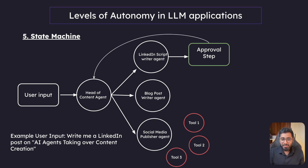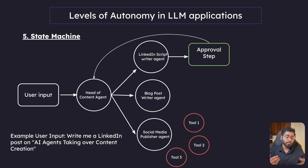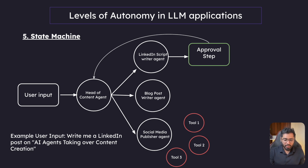Let's look at what is possible with a state machine. We have the user input, and the user only deals with a head of content agent. Taking the same example — write a LinkedIn post, a Twitter post, etc. — the user can say anything to the head of content agent. In a business, you would have one high-level subordinate you give all instructions to, and that subordinate has multiple subordinates under it. That is exactly what is happening here.